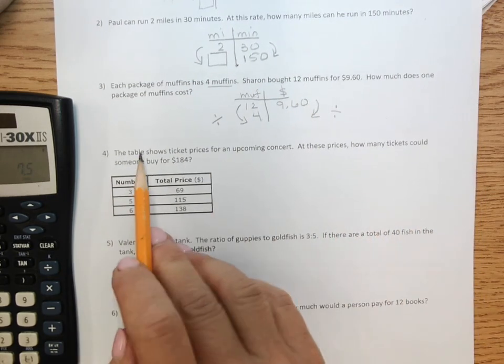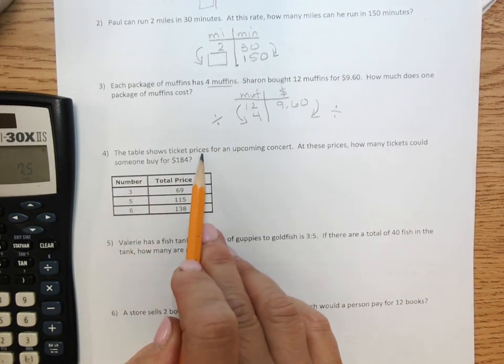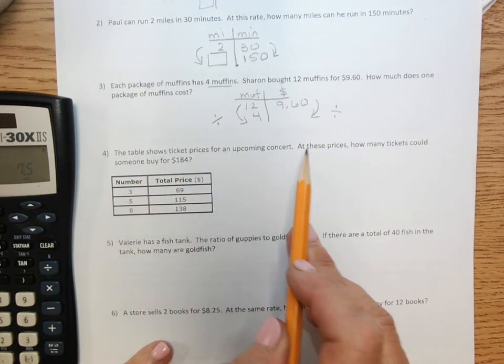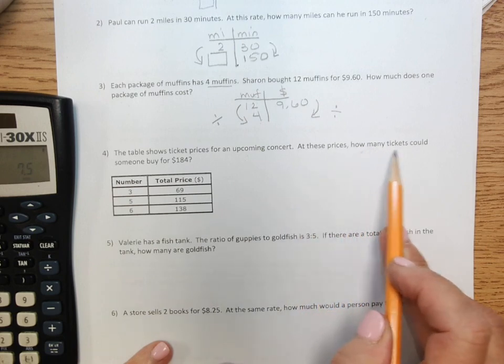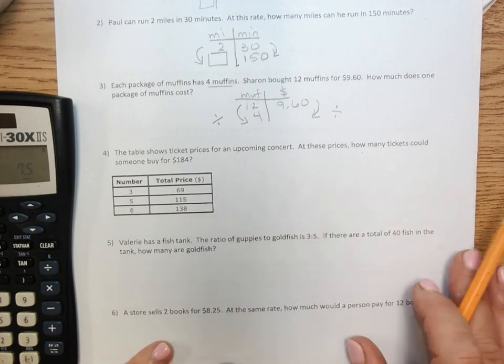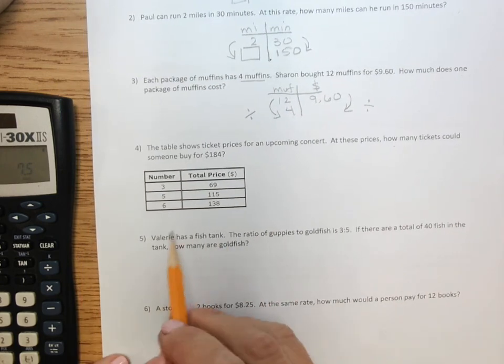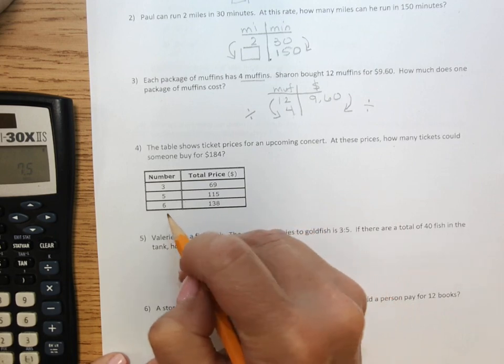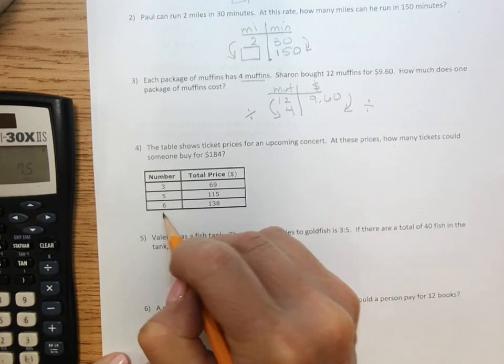Question number 4. The table shows ticket prices for an upcoming concert. At these prices, how many tickets could someone buy for $184? I think a good idea would be to find out how much one ticket cost. So I'm going to go here